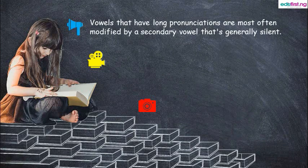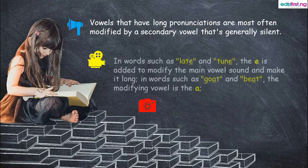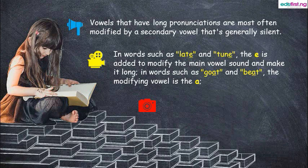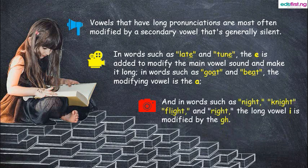Vowels that have long pronunciations are most often modified by a secondary vowel that is generally silent. In words such as Goat and Beat, the modifying vowel is the A. You can also identify a modified vowel in words such as night, flight, and right, where the long vowel I is modified by the GH. Please take note of that — very important.